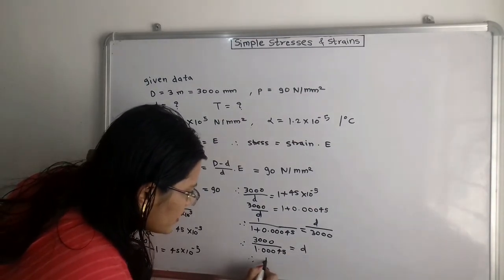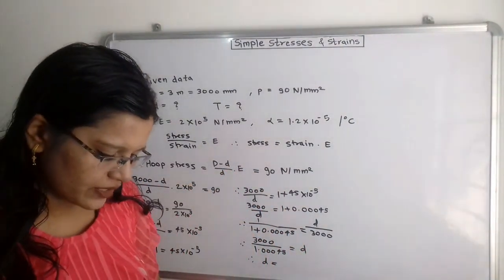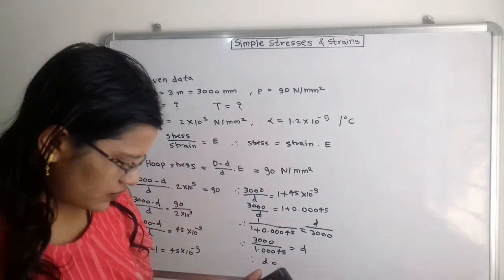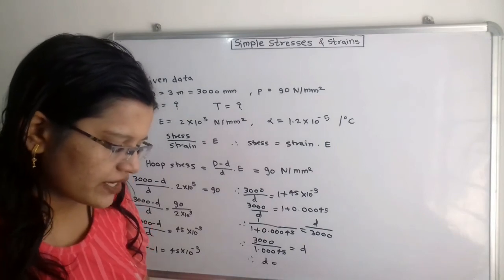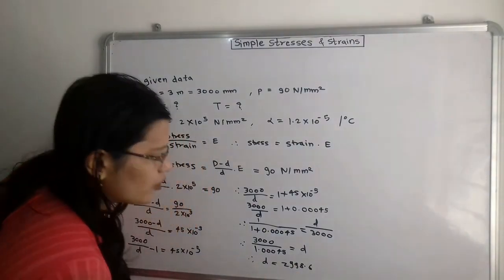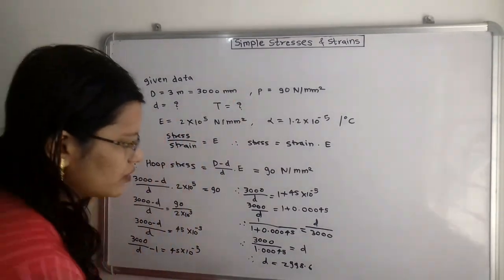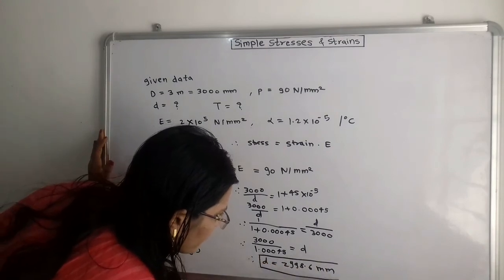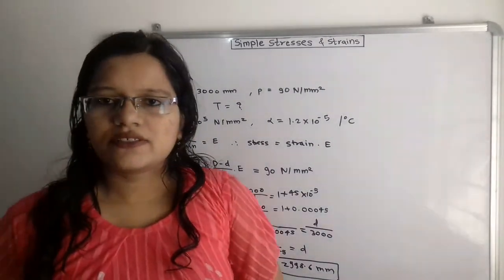Using a calculator: d = 3000 / 1.00045 = 2998.6 millimeters. So the internal diameter of the tire is 2998.6 mm. In this way we find small d.